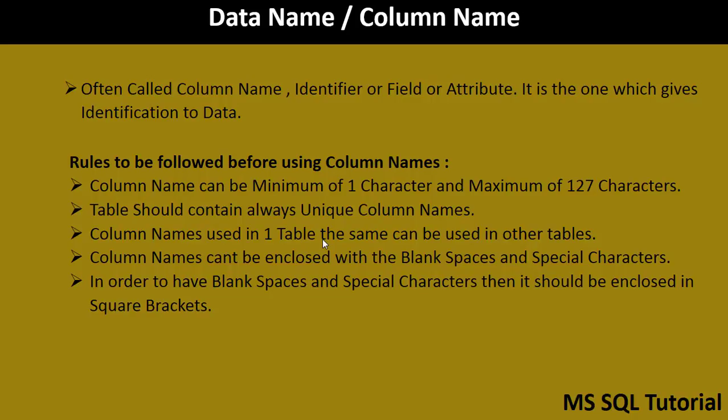Rule two: a table should always contain unique column names. For example, if you have a column named employee ID, you cannot give the same name to a second column in the same table — it won't be accepted. Rule three: column names used in one table can be reused in other tables. So employee ID used in the employee details table can also be used as a column name in another table.